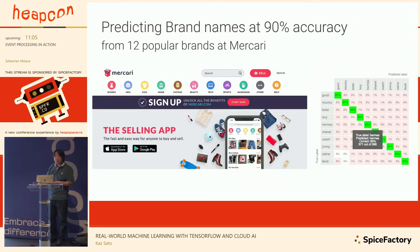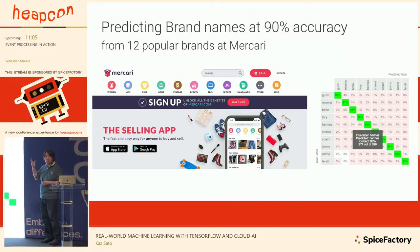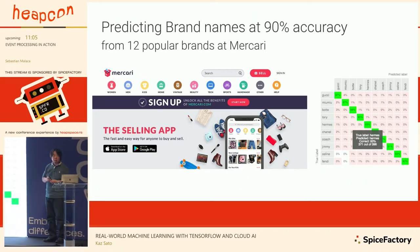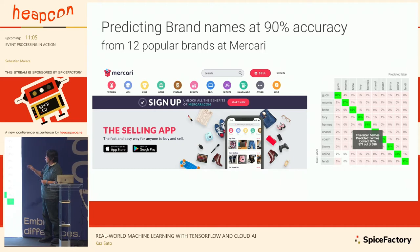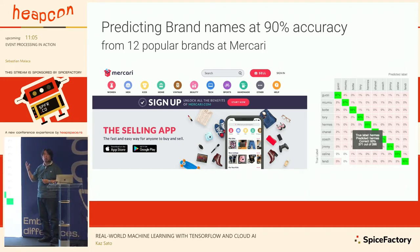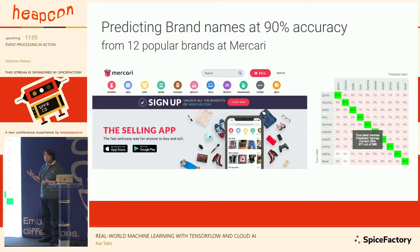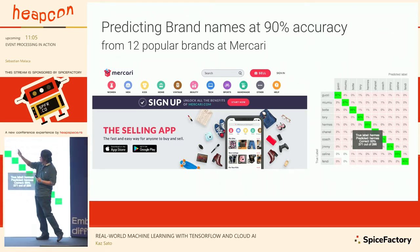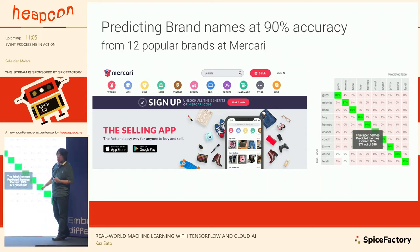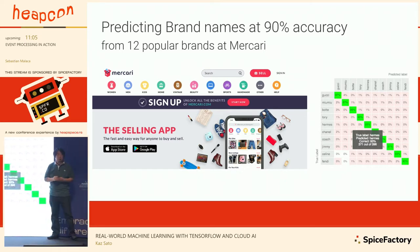Mercari is the most popular selling app in Japan — like eBay in Japan. They are trying out AutoML Vision for brand suggestion for sellers. When sellers upload any product images, it can suggest that it must be a Gucci bag or a Chanel bag.